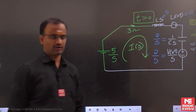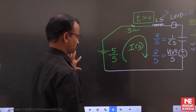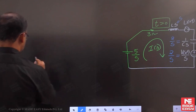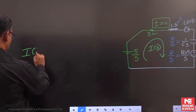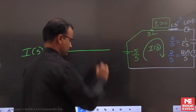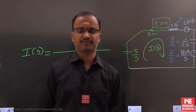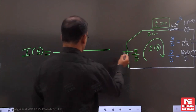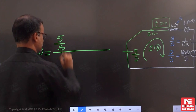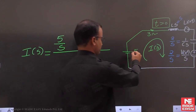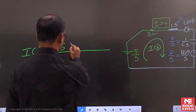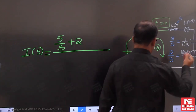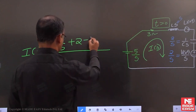Now write the current equation: I(S) equals the equivalent voltage divided by the equivalent impedance, since all elements are in series. Taking 5/S as reference, adding the initial inductor voltage source gives plus 2, and the capacitor initial voltage source with opposite polarity gives minus 2/S in the numerator.